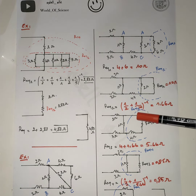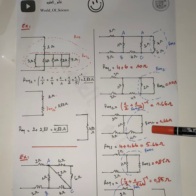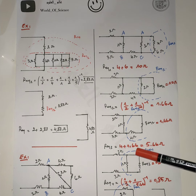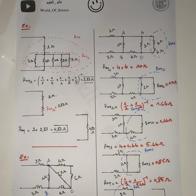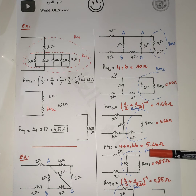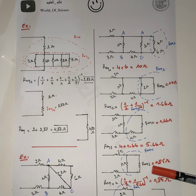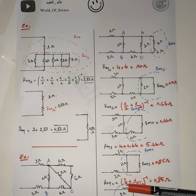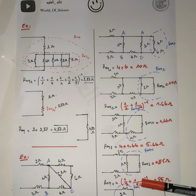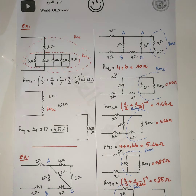R equivalent 3 is R equivalent 2 in series with 4, so R equivalent 3 equals 4 plus 1.66, giving 5.66 ohm. Then we move to R equivalent 4: R equivalent 4 is R equivalent 3 in parallel with 1, so R equivalent 4 equals (1 over 1 plus 1 over 5.66) to the power of minus 1, giving 0.85 ohm.